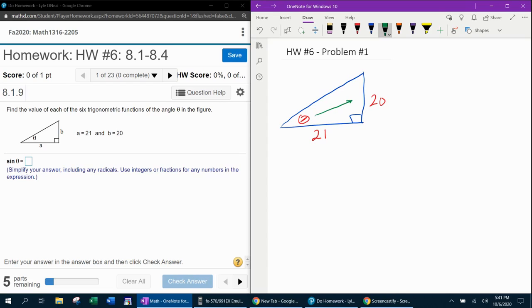So step number one, across from theta is the opposite side. So we're going to label him opposite. Across from the right angle is the hypotenuse, and so we're going to label him h. And then the other side has to be the adjacent. And if you'll get in a habit of labeling your sides in that order, it'll be a lot easier.